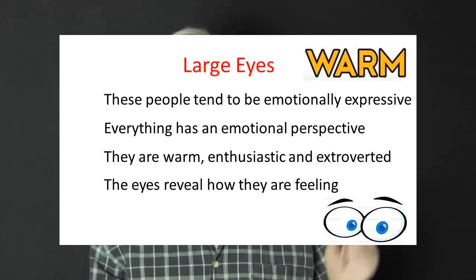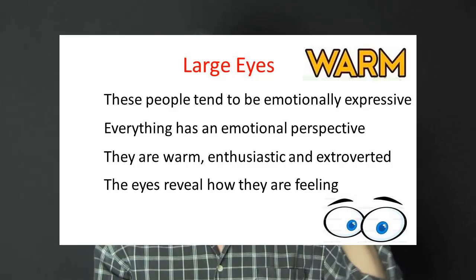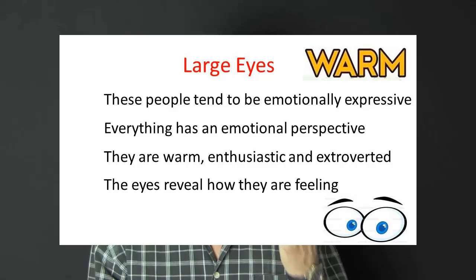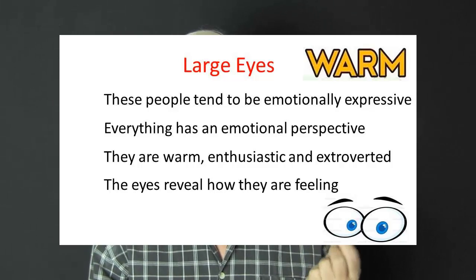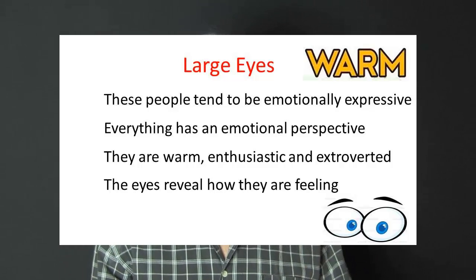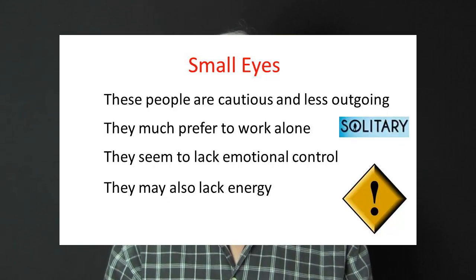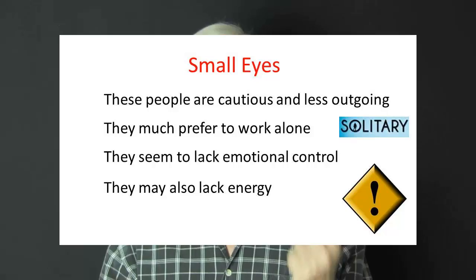Let's look at large eyes and small eyes. By large eyes, I don't mean protruding eyes, just eyes that are relatively larger than normal. People with large eyes tend to be emotionally expressive. In fact, almost everything is dealt with from an emotional perspective. They have a warm enthusiasm and they're often extroverted. You can literally see what is going on in this person's life — the eyes reveal it all. People with small eyes are cautious and less outgoing. They much prefer to work alone, can lack emotional control, and may even lack energy.